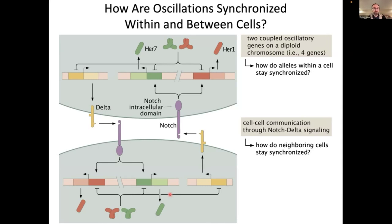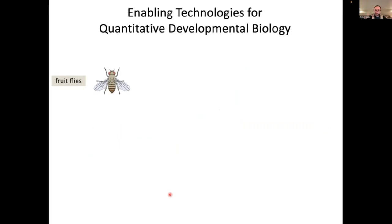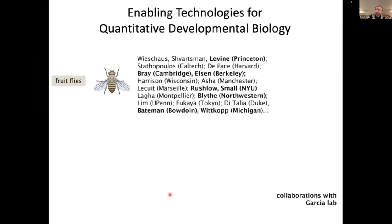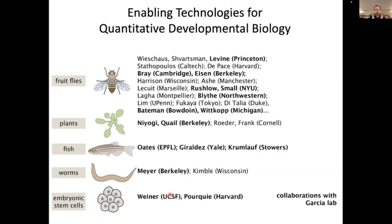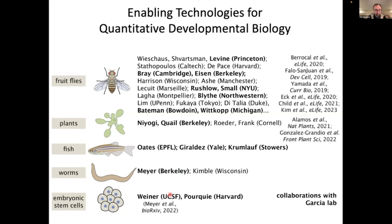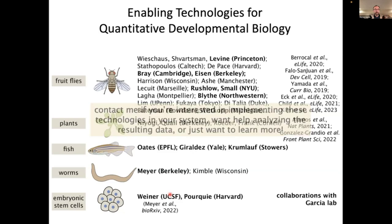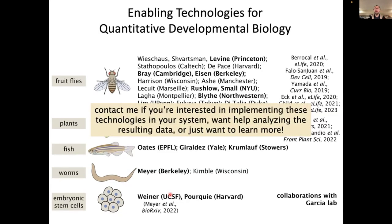Before I finish, let me just give a plug. All of this was enabled by technologies that we developed to light up the processes of the central dogma. We spearheaded them in flies and many labs are using them in the context of collaborations. I've shown you an example of how we've extended these technologies to fish; we've also applied them in flies, we're working on them in worms, we've done them in embryonic stem cells. The reason I'm saying this is that we're committed to growing and nurturing a vibrant community of quantitative developmental biologists. We host people in the lab, share reagents before they're published — so if you're interested in thinking about these approaches in your particular organism, just contact me and I'll be very happy to talk to you.